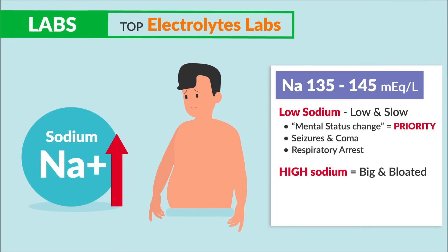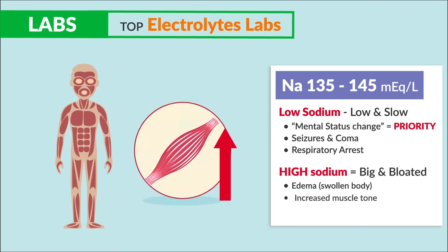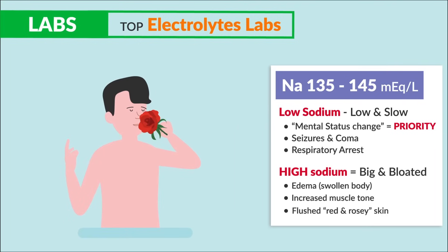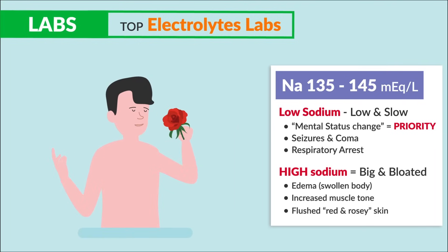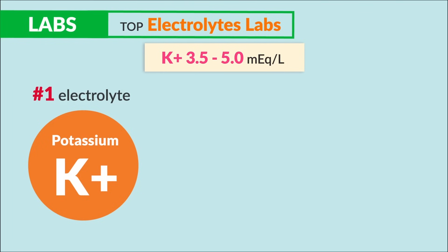In high sodium, we get big and bloated since it swells the body with fluid, so we see edema — a swollen body — increased muscle tone, and flushed, red and rosy skin signs. For potassium, the normal range is 3.5 to 5.0, and this is the number one electrolyte to know for the NCLEX and nursing exams.